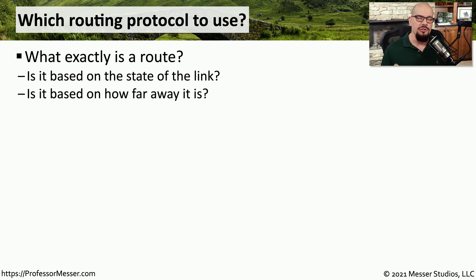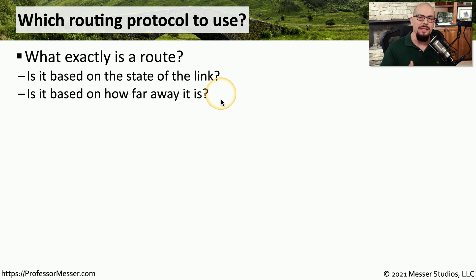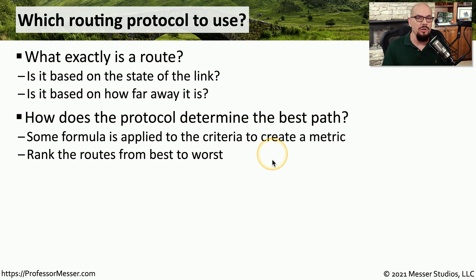With all of these different routing protocols to choose from, which one should you use on your network? The answer may depend on a number of different criteria. For example, are you trying to determine where a route might be based on the state of that link — whether the link is up or down? Or is the determination based on how far away that particular connection might be? And is distance something relating to the number of hops between one point and another, or is it related to the speed of the communication? Another important consideration is how the routing protocol determines what the best path might be, based on a certain set of criteria — from that it determines what a metric might be to a particular site. This metric allows the routing protocol to rank these routes from best to worst, and then it will send your data through the best type of connection.